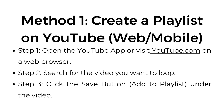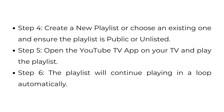Step three, click the save button and add to playlist under the video. Step four, create a new playlist or choose an existing one, and ensure the playlist is public or unlisted. Step five, open the YouTube TV app on your TV and play the playlist. Step six, the playlist will continue playing in a loop automatically.